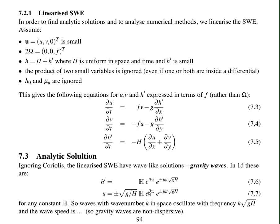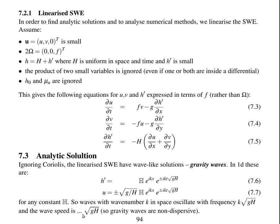So waves with wave number k oscillate in space with frequency k times the square root of gh, and the wave speed is the square root of gh. This means that gravity waves are not dispersive. The wave speed doesn't depend on the wave number.